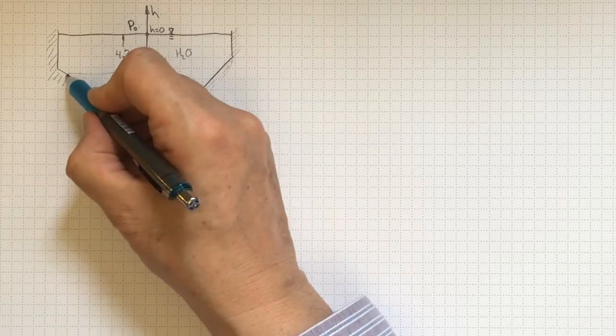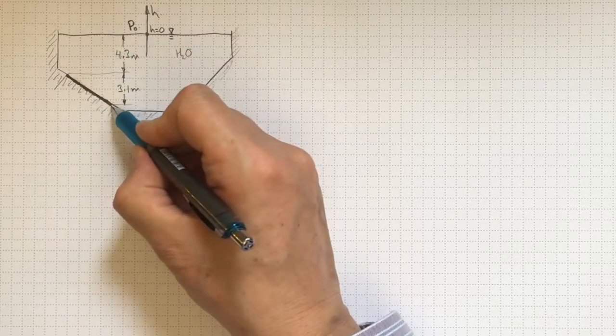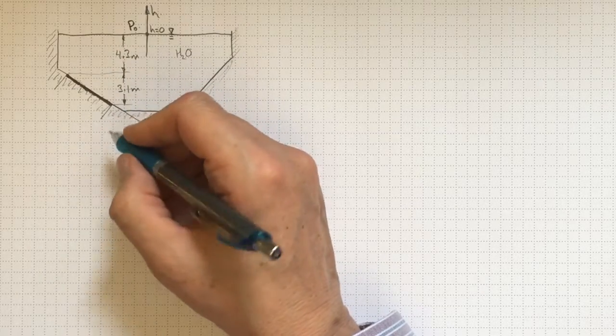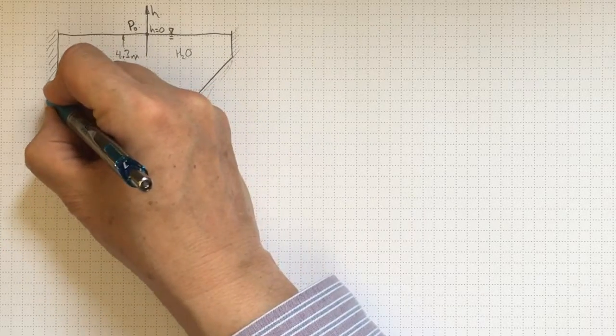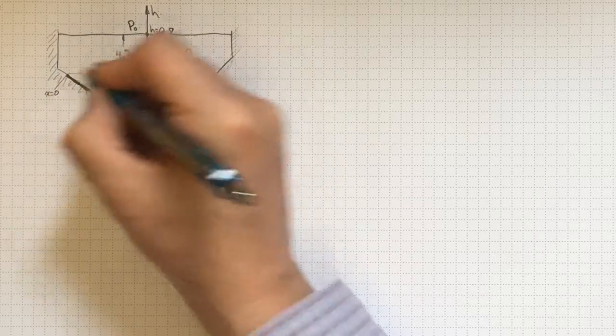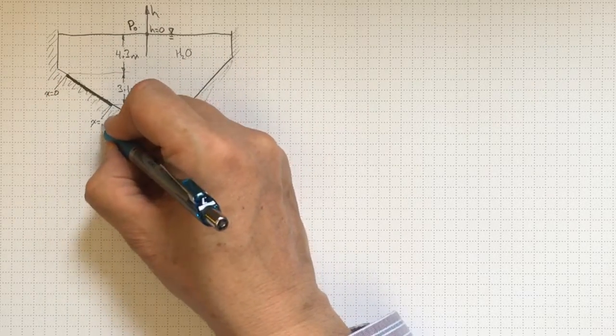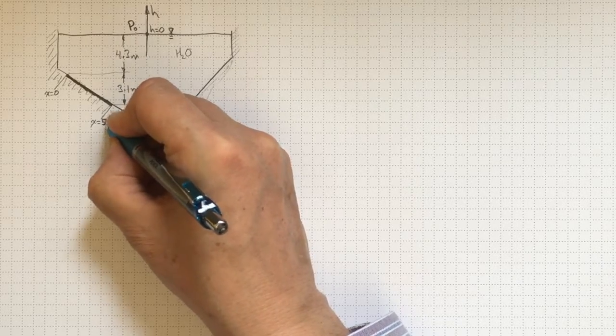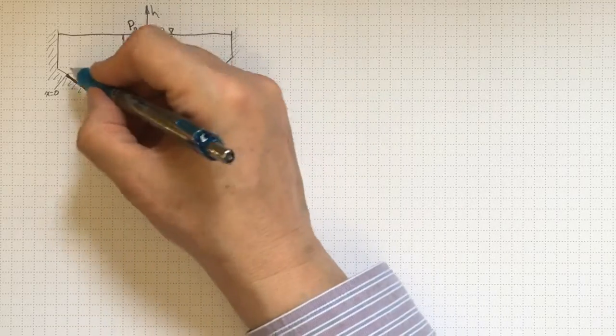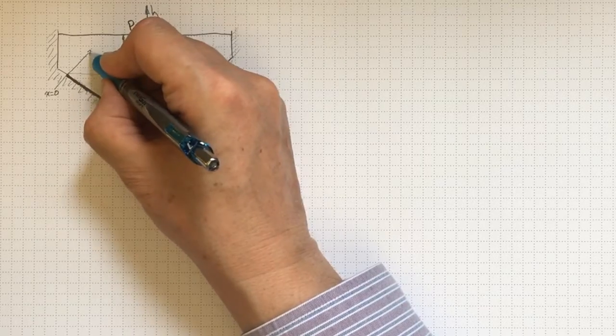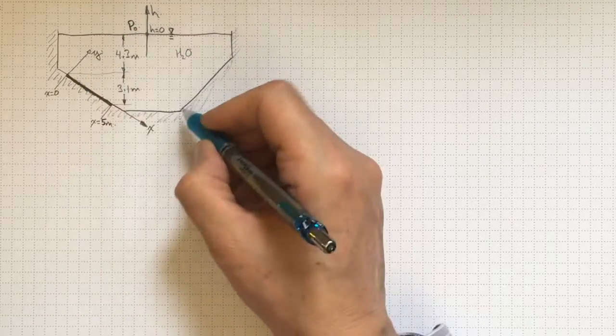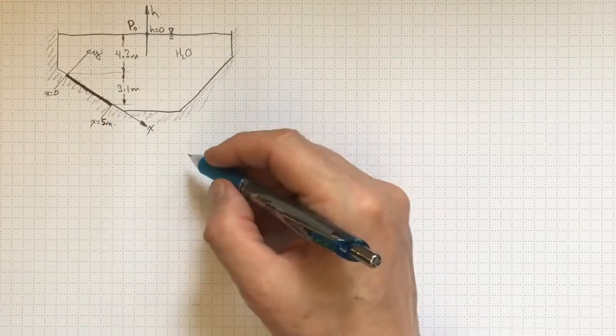Since this is the start of the trapdoor, and that's the end of the trapdoor, it might be convenient to make that x equal to zero, and this x equal to five meters. That would make our y-direction perpendicular to x, and our z-direction goes in and out of the page.